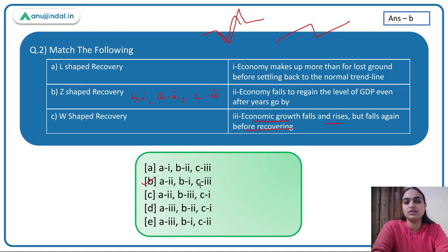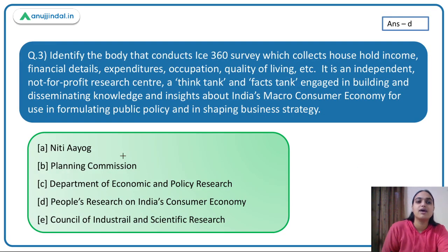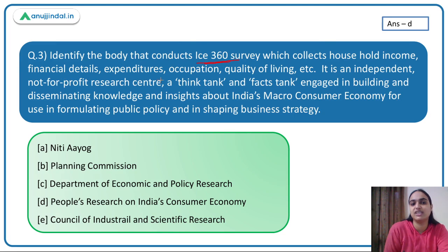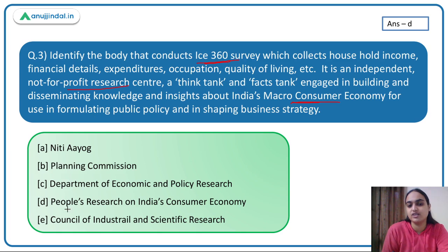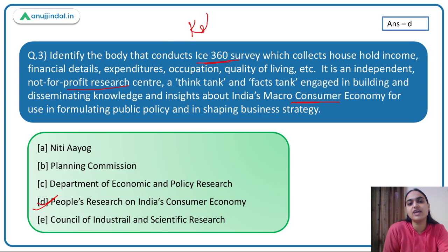Moving on to the third question: identify the body that conducts the ICE 360 survey, collecting household income, financial details, and expenditures — an independent nonprofit research center doing research on the macro consumer economy. The answer is PRICE — People's Research on India's Consumer Economy — which conducts this ICE 360 survey and concluded that K-shaped recovery is happening in India.